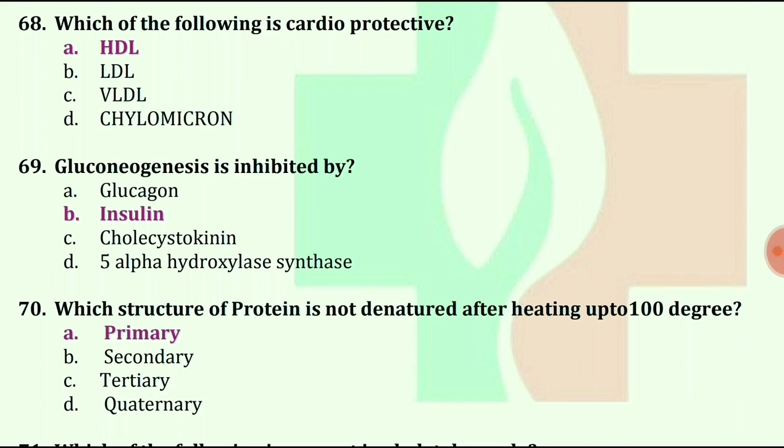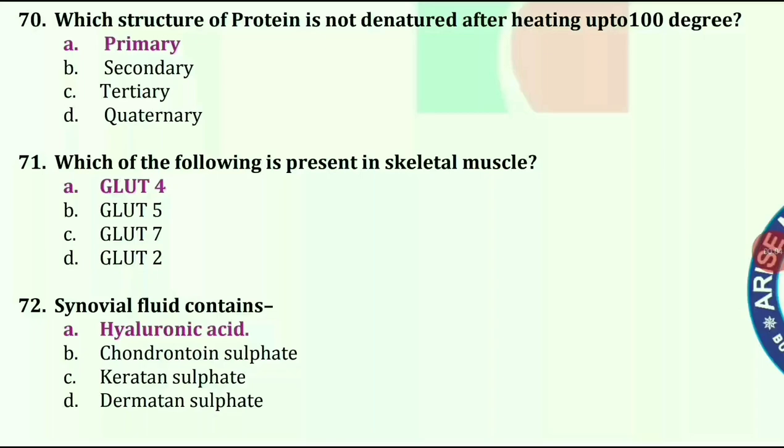Which structure of protein is not denatured after heating up to 100 degrees? Options are primary, secondary, tertiary, quaternary. Answer is primary.